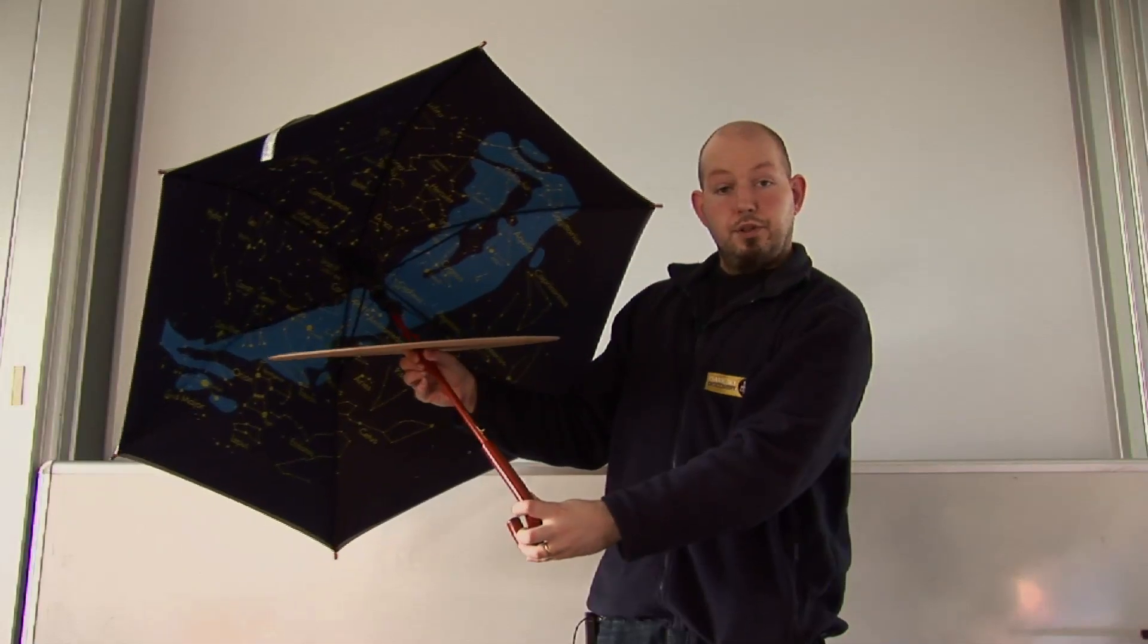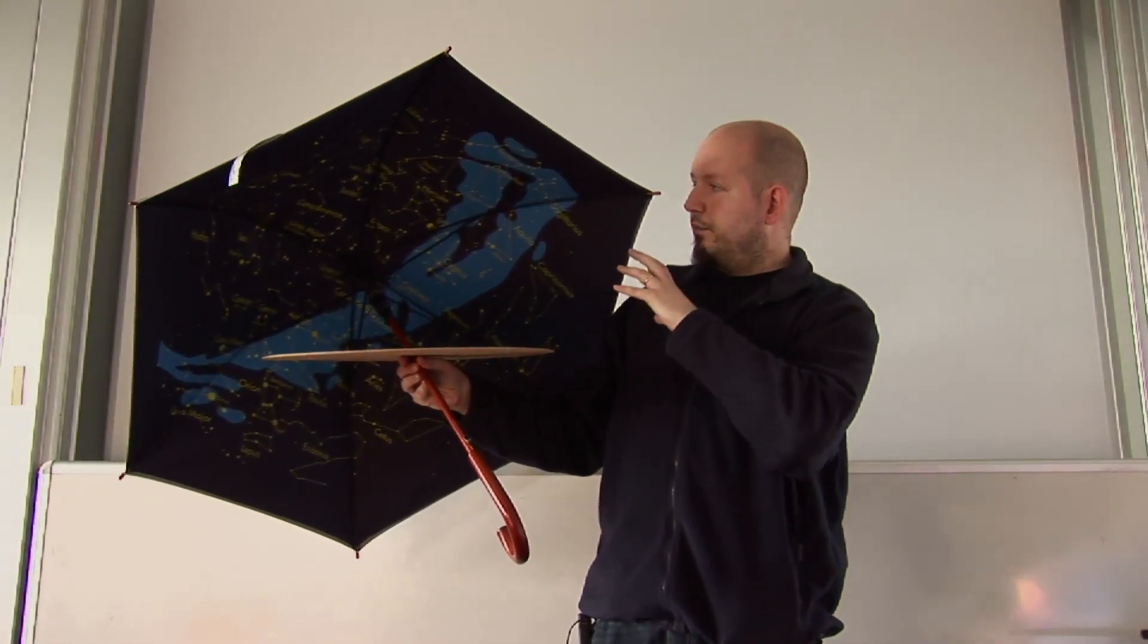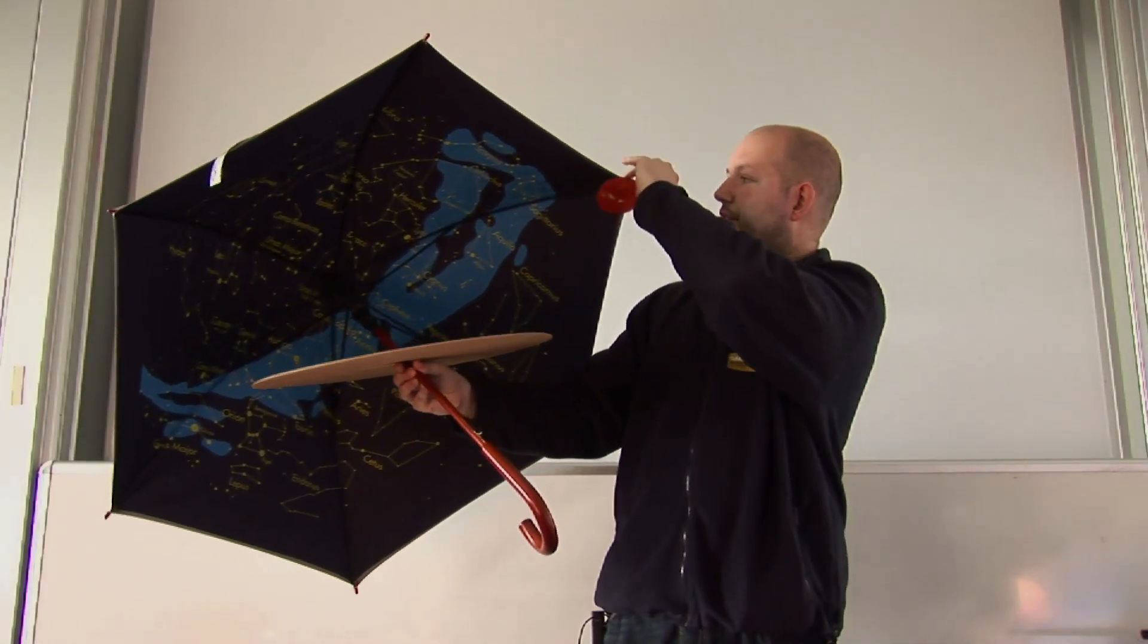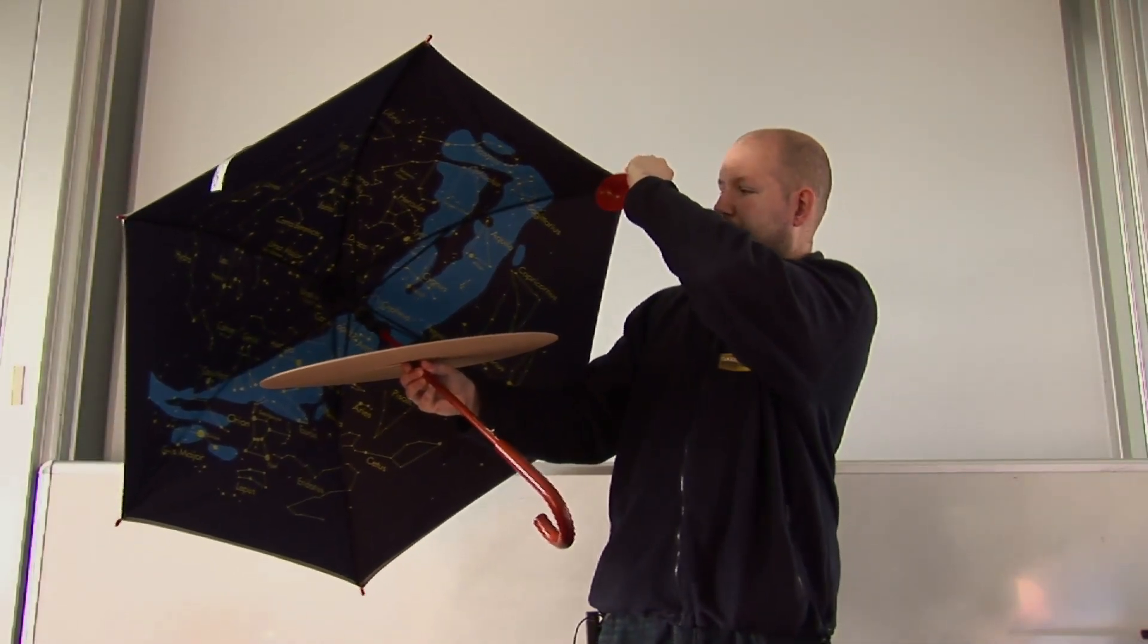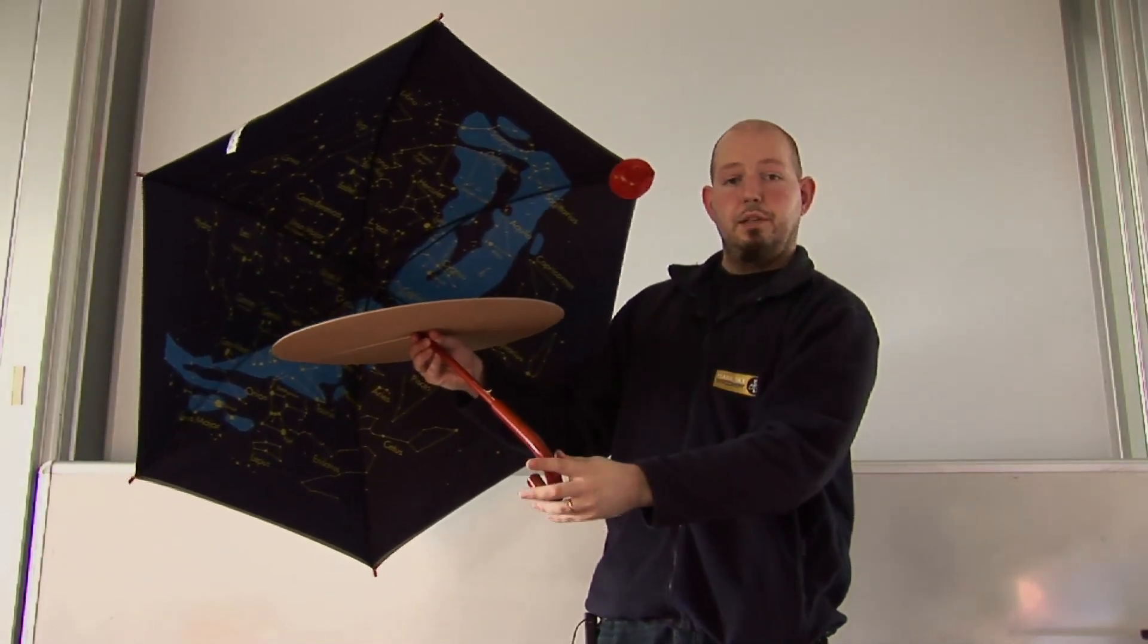But our picture still isn't complete because we don't see the stars during the daytime. We have our sun which is too bright and it blots out everything else. So I'm going to add our sun in just up here, and now all these stars are invisible. It's daytime.